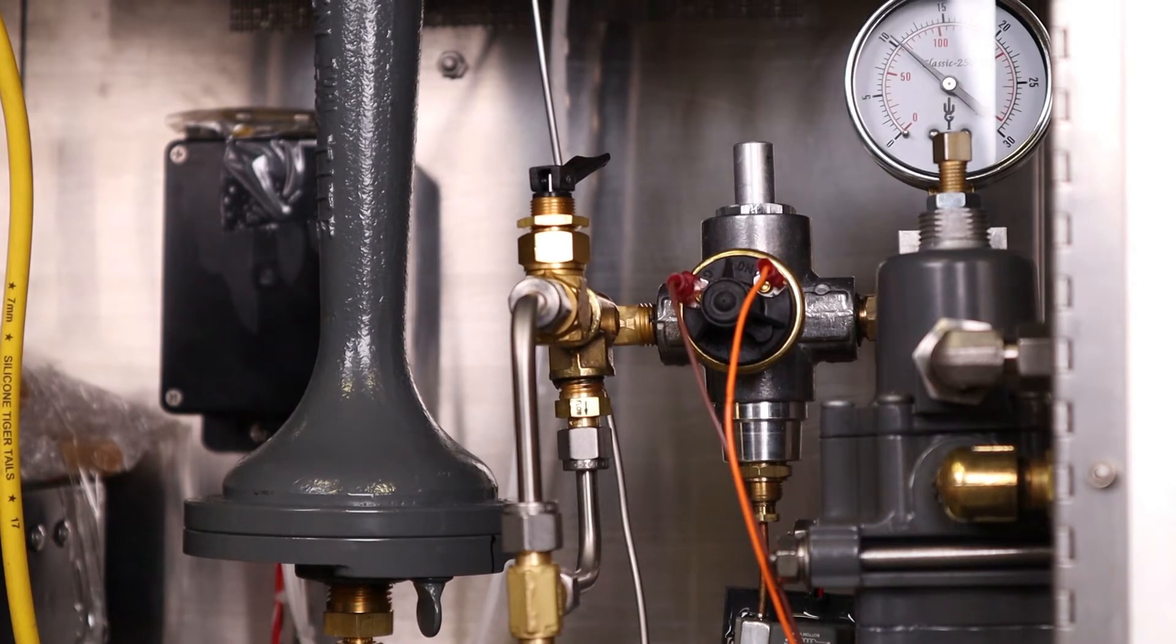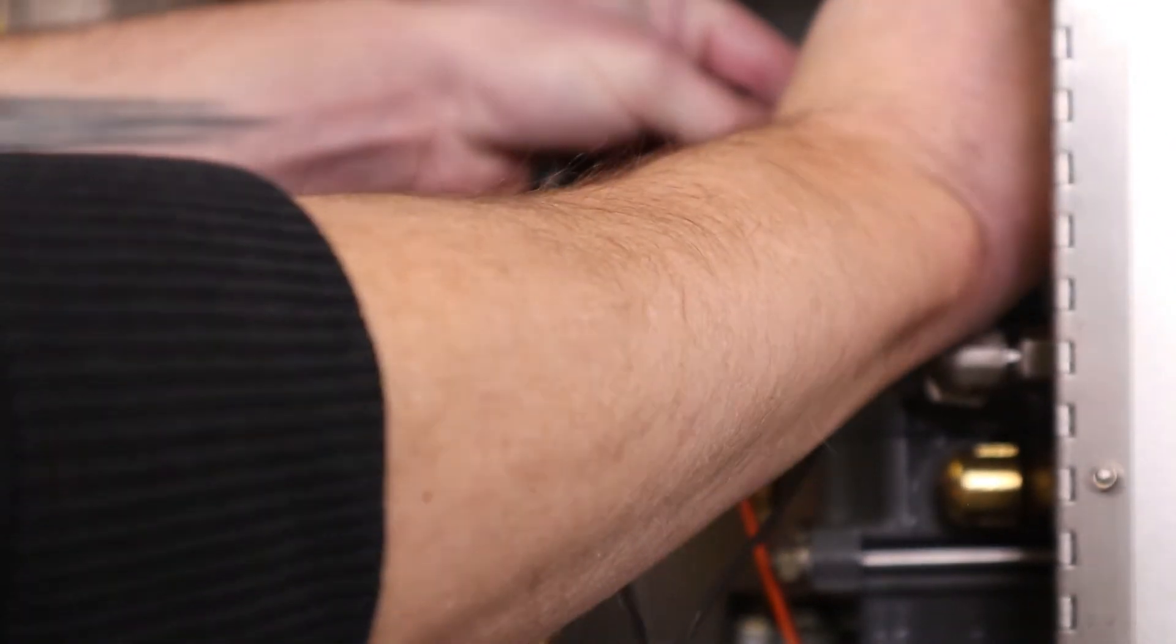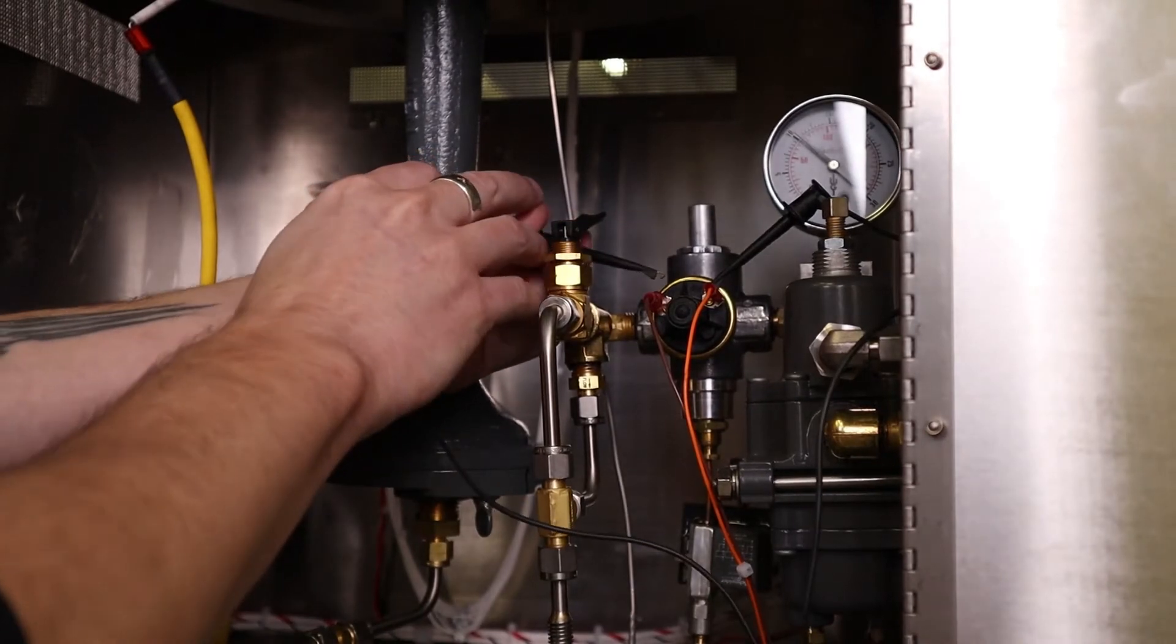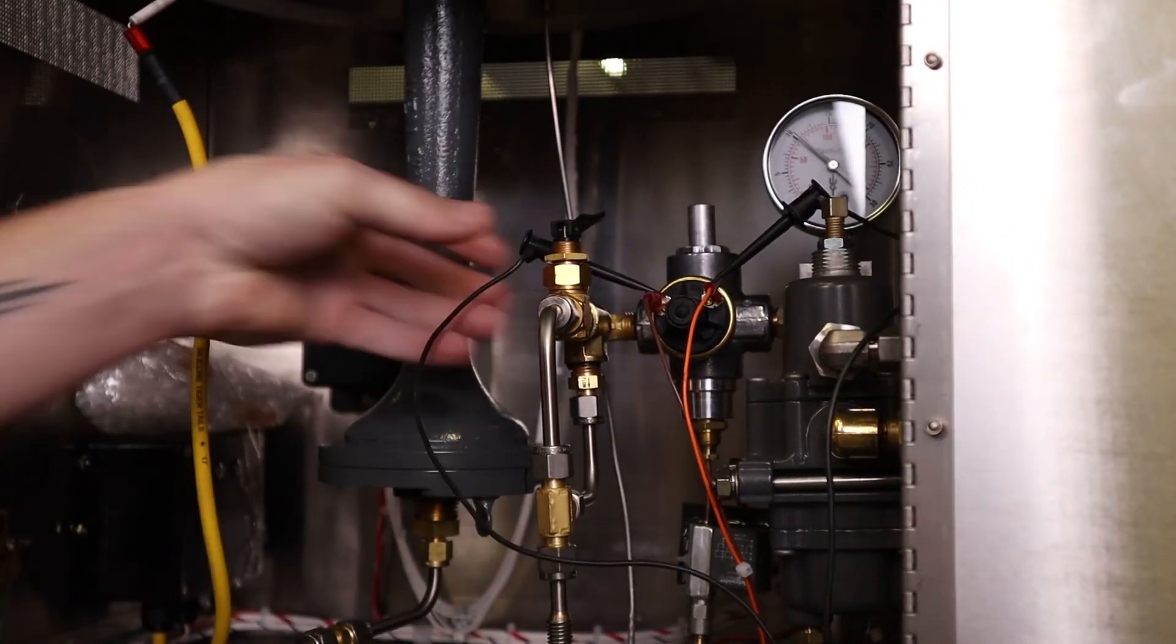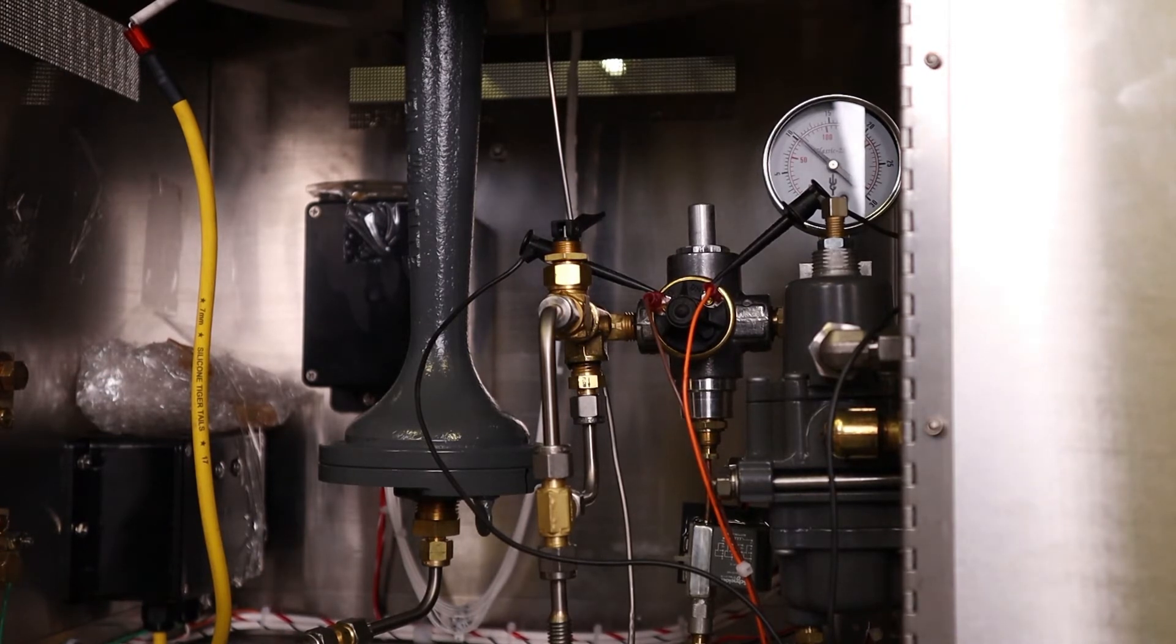Next, we'll check the operation of the ignition system by shorting the terminals of the pressure switch. I'm going to take this jumper and put a clip on either side. At this point, you should hear the ignition sequence start to tick. It should be loud and strong.